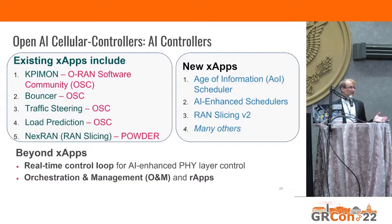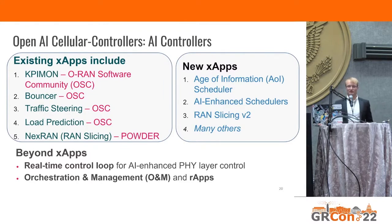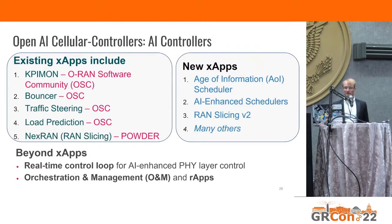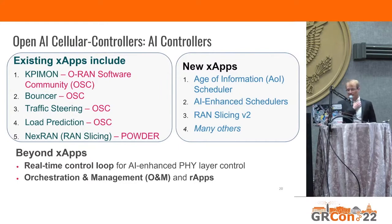Now that we have the E2 interface — essential for near-realtime RIC to RAN control — we can develop X-apps or integrate existing ones. Industry has been working on ORAN for a while and offers many X-apps already integrated in our system, from the ORAN Software Community and other contributors like the Powder testbed's next RAN slicing app. We're now developing our own X-apps: an age of information based scheduler, an AI enhanced scheduler, and many others, because our project is about AI control of next generation networks.